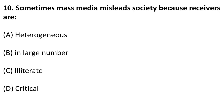The next question: sometimes mass media misleads society because receivers are what? Many might think the answer is illiterate, but that is not correct. For mass media like TV or radio, the audience is very large and diverse. Therefore, the correct answer is that receivers are heterogeneous.